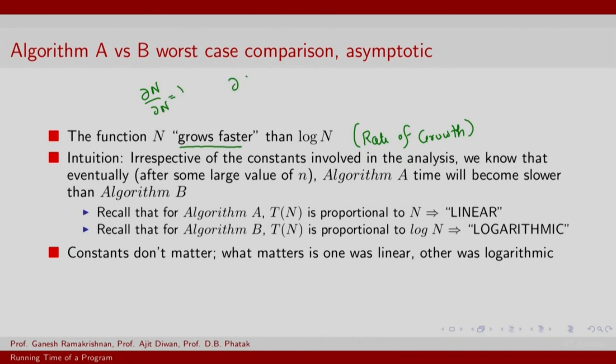The derivative of N, dN by dN, is 1, whereas the derivative of log N with respect to N is 1 by N. So we have some intuition for continuous valued numbers, for real numbers for example, that N does grow faster than log N. Now, can we articulate this algorithmically, and we try and build up on this intuition. Intuition is that irrespective of the constants involved in the analysis, we know that after some large value of N, algorithm A will become slower than algorithm B. So here, slower is where we talk about the rate of growth.